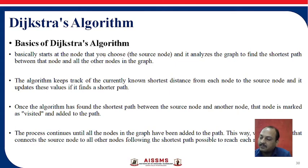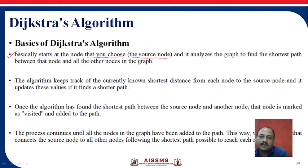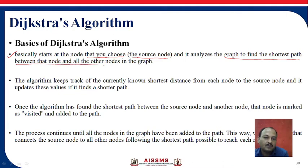Dijkstra's algorithm basically starts at the node that you choose — that is called the source node. You have a graph, and from that graph you want to find out the shortest path and shortest distance from that source node to all other nodes. You can select any node as per your choice and start. The target is to analyze the graph to find the shortest path between that node and all other nodes in the graph.